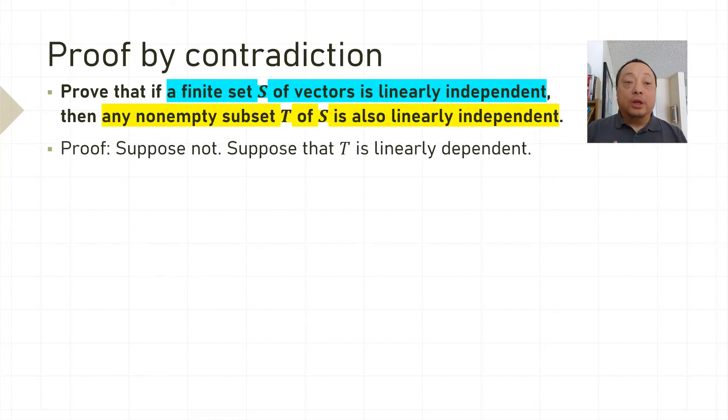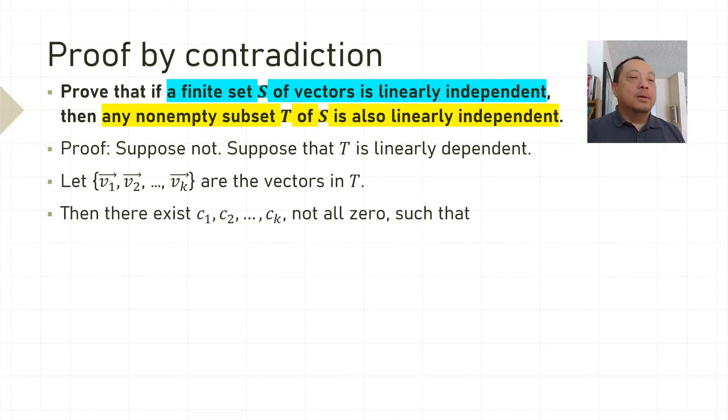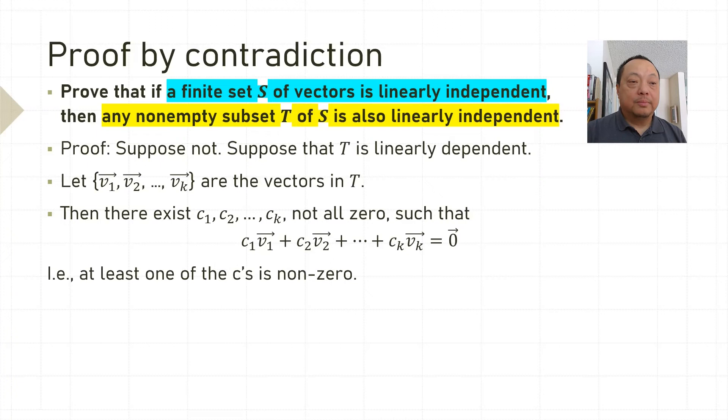Proof. Start with saying suppose not. Suppose T is linearly dependent instead. Let's name the vectors in T as v1, v2 up to vk. Then there exists some coefficients c, not all 0, such that c1*v1 + c2*v2 + ... + ck*vk equals the 0 vector. At least one of the c's is non-zero.